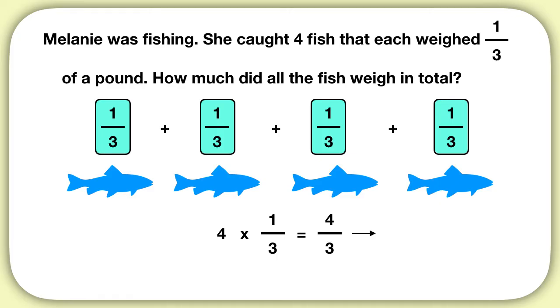Then we should convert this to a mixed number. What is 4 thirds as a mixed number? It's 1 and 1 third. So all the fish in total weigh 1 and 1 third pounds.